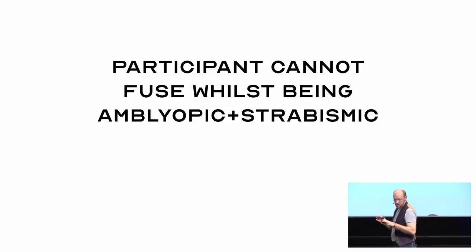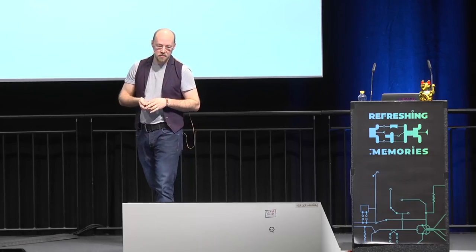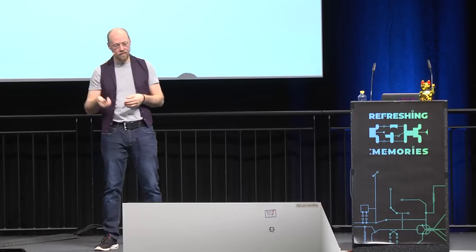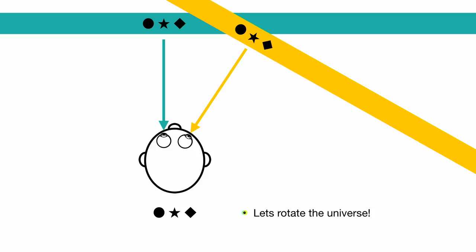So the next sub-hypothesis. We've broken through the suppression. They can use both eyes simultaneously. The participant cannot fuse the input from both eyes whilst being amblyopic and strabismic. Well, we've overcome the suppression. How do we overcome the strabismus? So one eye is misaligned. What we can do in a VR headset, we can just rotate the entire universe for the misaligned eye. Simple. So this way, the same object, no matter where the eye is, appears at the same position in the retina, and as far as the brain is concerned, both eyes are looking straight ahead. Fantastic.